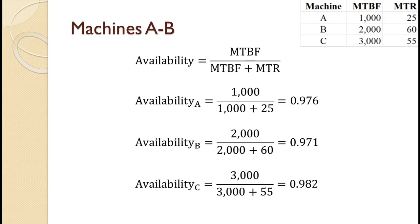For Machine C, 3,000 divided by the quantity 3,000 plus 55 equals 0.982 or 98.2%.